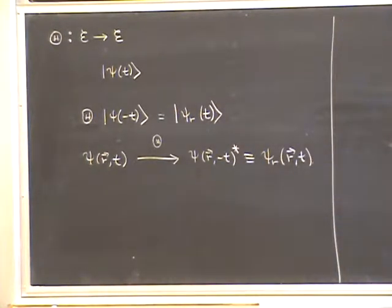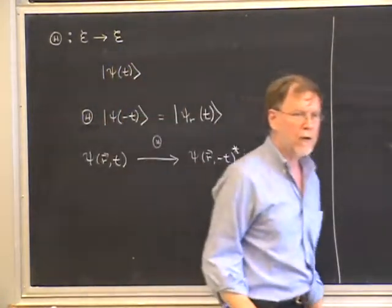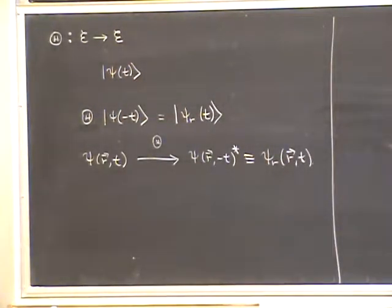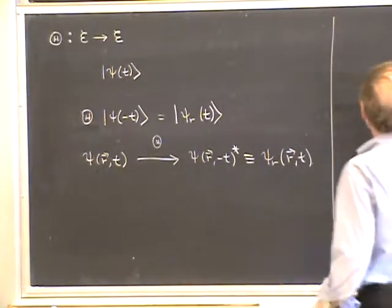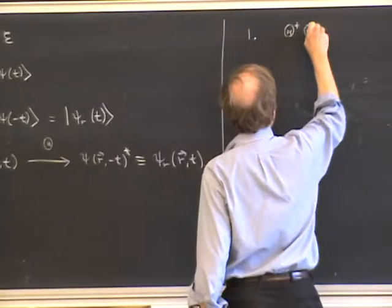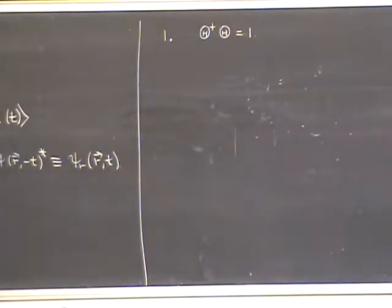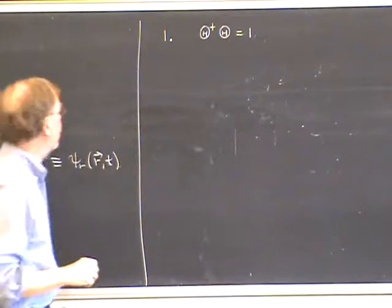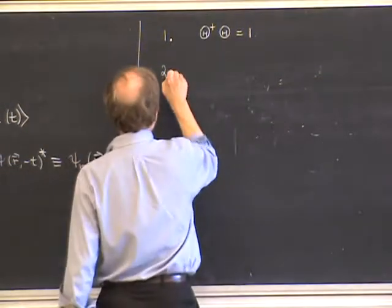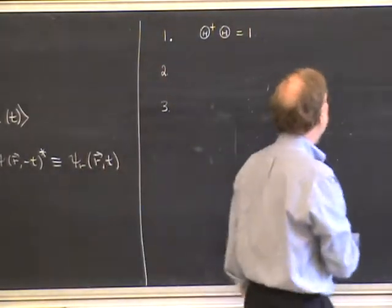For general systems, we're going to derive the form of the time-reversal operator very much like what we did with parity—by writing out a list of postulates and demands that it should satisfy in general terms. The first postulate is that θ† θ = 1. This is just like we did with parity, and the logic is that we want the symmetry operation to preserve probabilities. The second and third requirements come from what we do in classical mechanics.